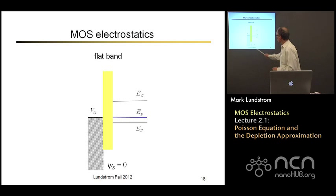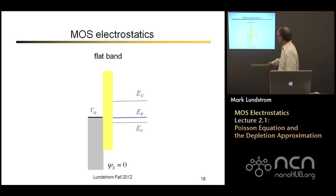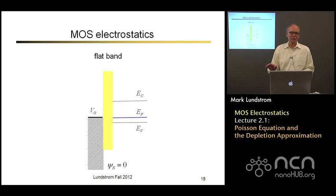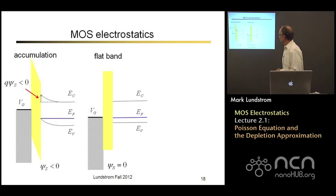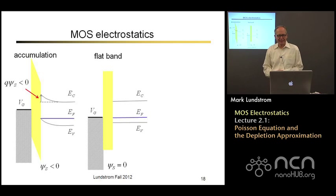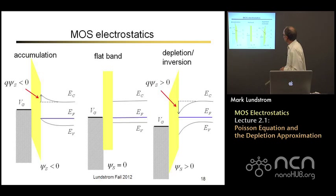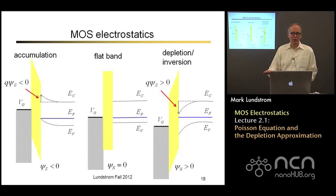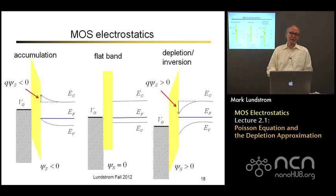We've talked about MOS electrostatics. Our starting point was ideal flat band conditions, which in an ideal device occurs at zero gate voltage, but in a real device is offset by metal-semiconductor work function differences. If I apply a negative gate voltage, I pull the bands up, surface potential is negative, holes pile up — we call that accumulation. If I apply a positive surface potential, the bands bend down: at first we call that depletion, just pushing holes away. If we bend the bands down far enough that electrons begin to pile up near the surface, we call that inversion.